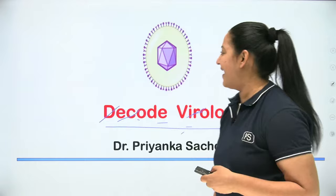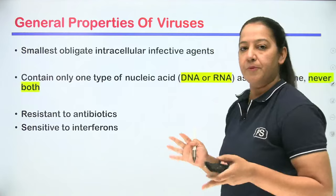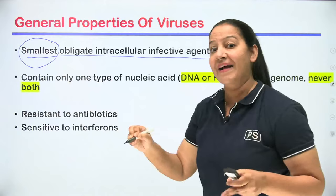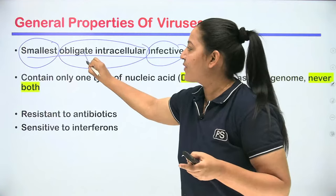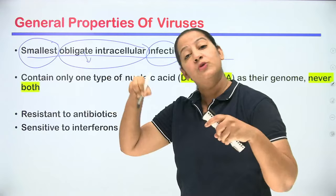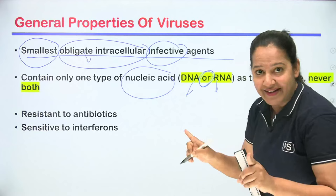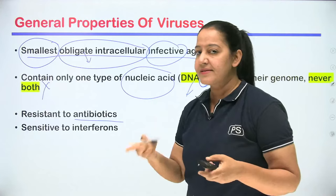Let's start with the structure of the virus. Viruses are the smallest obligate intracellular infectious agents — smaller than bacteria, parasites, and fungi. They are 'obligate,' meaning strictly intracellular: they cannot replicate outside the host cell. They contain nucleic acid, but either DNA or RNA — never both.